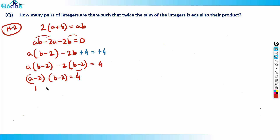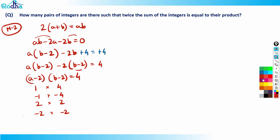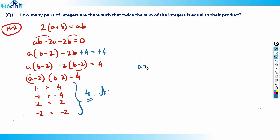Now we need integer factor pairs of 4. We can write 4 as: 1 × 4, (−1) × (−4), 2 × 2, and (−2) × (−2). That gives four pairs of (a − 2, b − 2), hence four pairs of (a, b). For example: a − 2 = 1, b − 2 = 4 → (a, b) = (3, 6); a − 2 = −1, b − 2 = −4 → (a, b) = (1, −2). All four solutions match Method 1. The answer is 4.